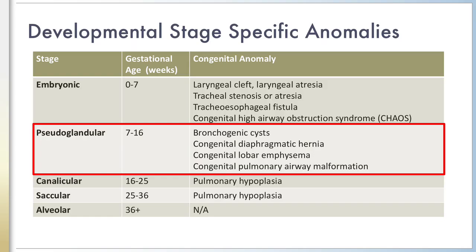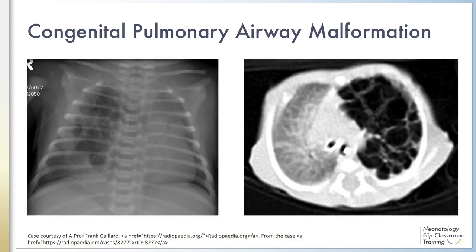During the pseudoglandular phase, airway branching continues and the lung mesenchyme grows with the airway. Anomalies of the developing lung that may occur during this stage include bronchogenic cysts, congenital lobar emphysema, congenital pulmonary airway malformations, and congenital diaphragmatic hernia.